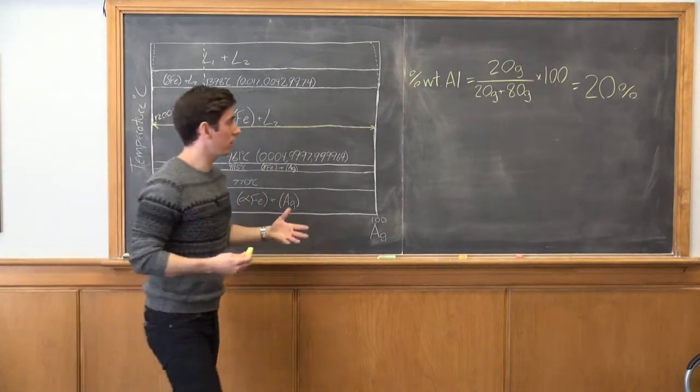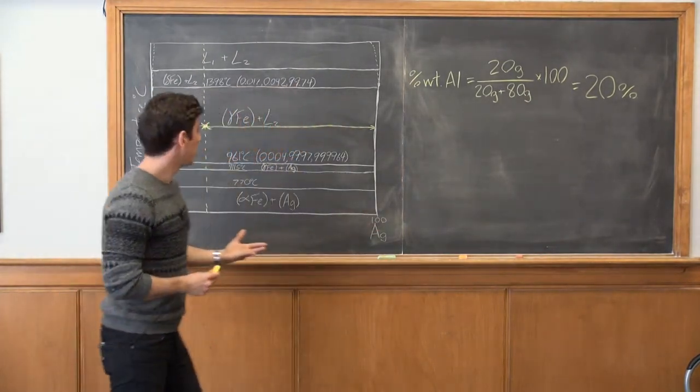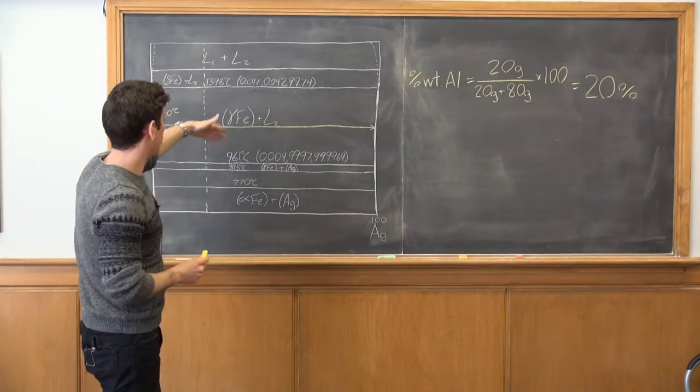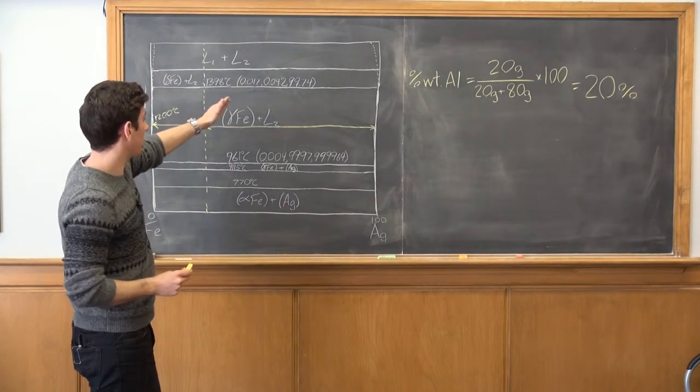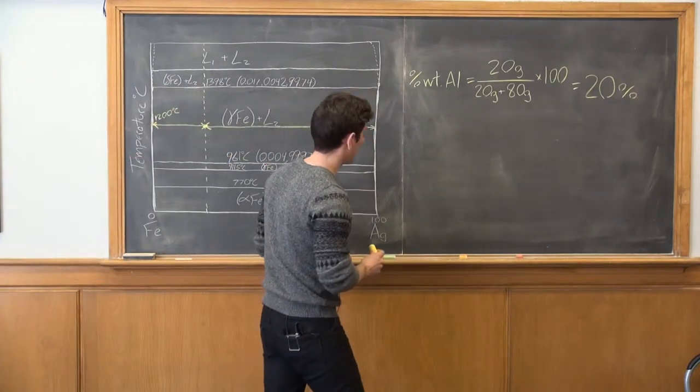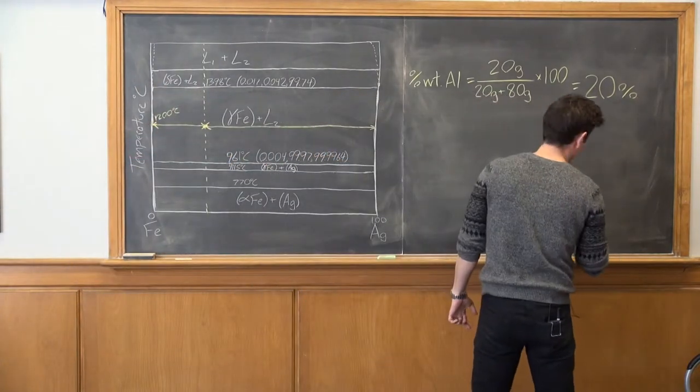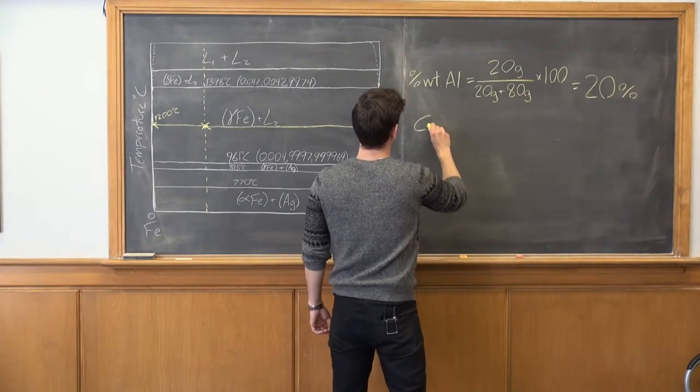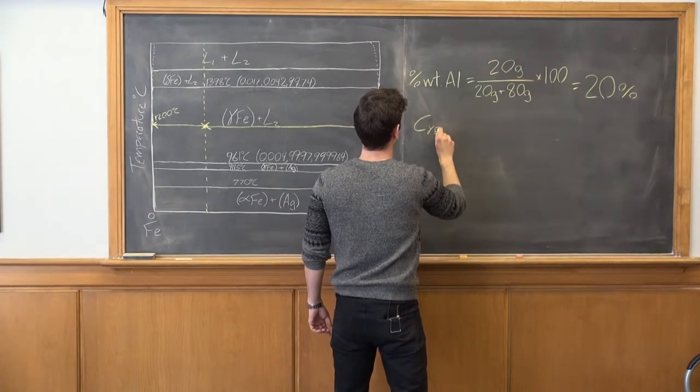However, this is maybe a little bit more involved than you would need to do. You could probably just assume that this is about 99.9 or 99.98 or something like that, but I'm just going to show you this way of doing it. So let's look at our composition of gamma iron.